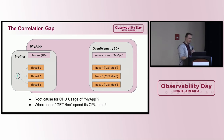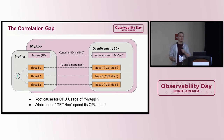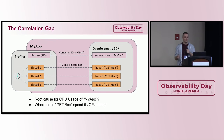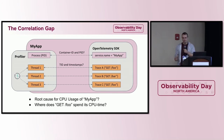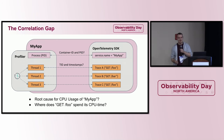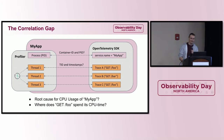One approach we could take is to correlate data indirectly through operating system level resources. For example, to look up profiling data for all instances of a given OpenTelemetry service, we'd need a two-step query: first find all container IDs and process IDs for all service instances, then filter profiling data based on that. This is doable, but depending on your backend it may involve joins which are not so nice for large data sets.